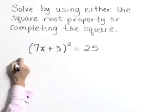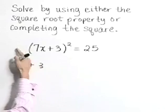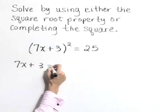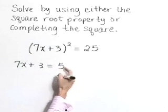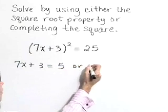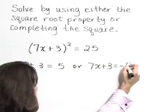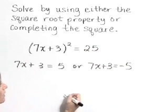So let's write 7x plus 3 after we take the square root of that quantity squared. 7x plus 3 is equal to a positive 5, which is the square root of 25, or 7x plus 3 is equal to a negative 5, which is the negative square root of 25.